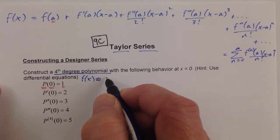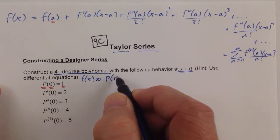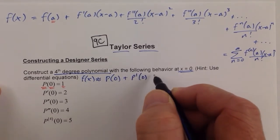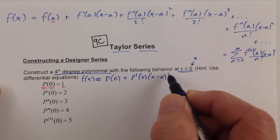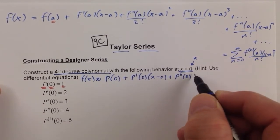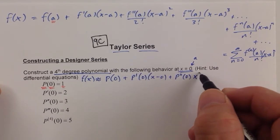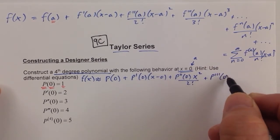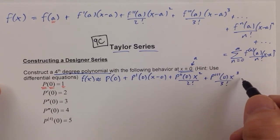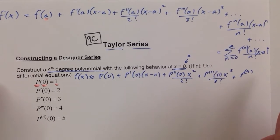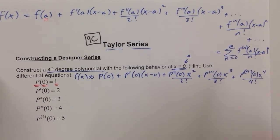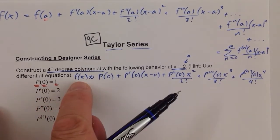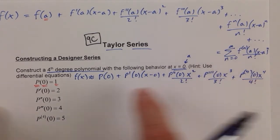So f of x is approximately equal to the polynomial's value at 0, plus the polynomial's derivative at 0 multiplied by x minus 0 to the first power — since x equals 0 is where we're centered — plus the second derivative of the polynomial at 0 multiplied by x squared over 2 factorial, plus the third derivative at 0 multiplied by x cubed over 3 factorial, plus the fourth derivative of the polynomial at 0 multiplied by x to the fourth all over 4 factorial.